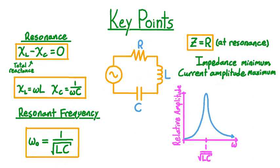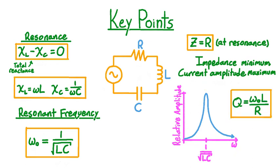A graph of relative current amplitude versus angular frequency shows a sharp peak at the resonant frequency, meaning the same drive voltage produces a much larger current at resonance than at other frequencies. To quantify the sharpness, we define the Q or quality factor as the resonant angular frequency times the inductance divided by the resistance. Larger Q values correspond to sharper peaks, and smaller Q values to broader peaks. We can determine Q from a graph by measuring the peak width and the resonant frequency, and knowing any three quantities in the formula allows us to find the fourth.